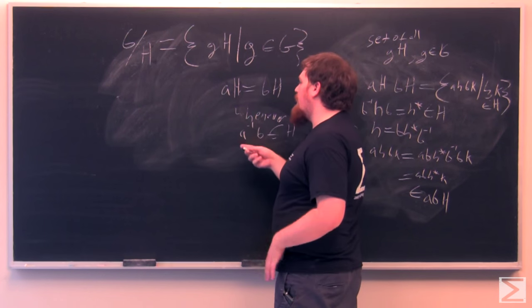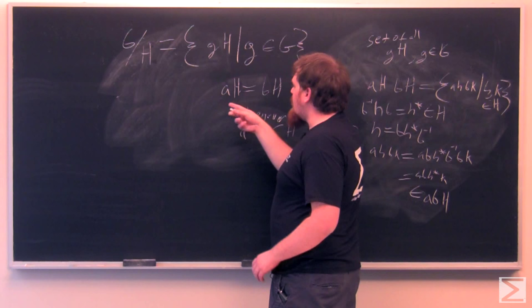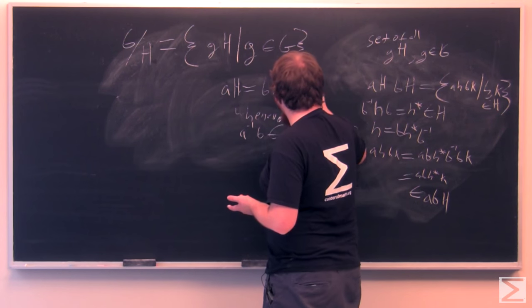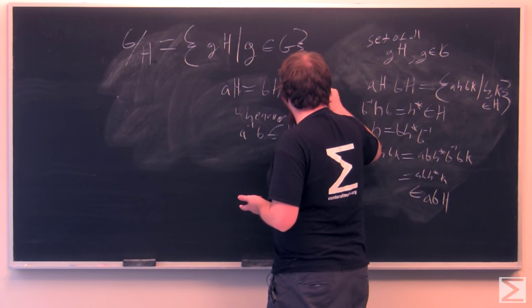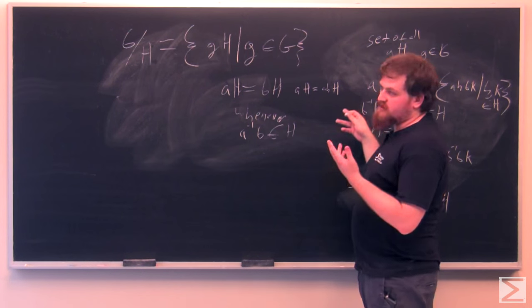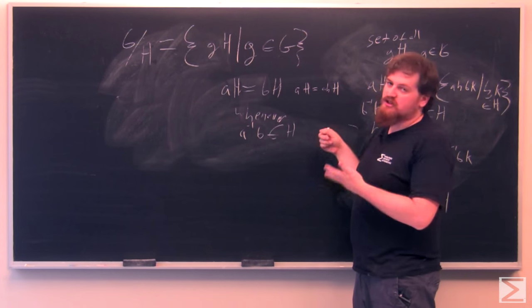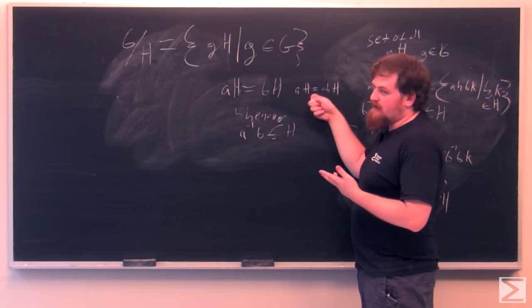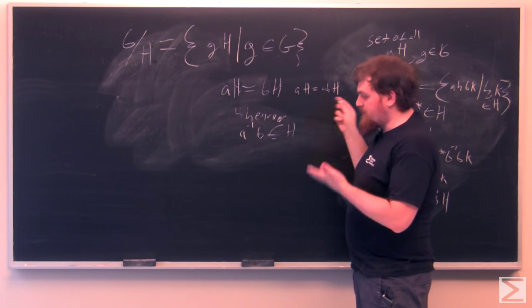Because AH will equal A times, since H multiplying into H doesn't change any of the elements in H, because H is closed under multiplication. If H is A inverse B, then you get A times A inverse B, which is going to be equal to BH.